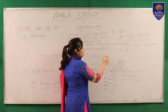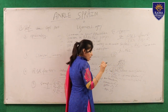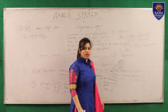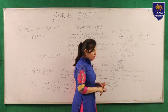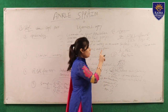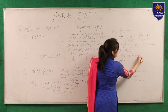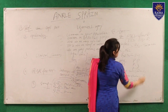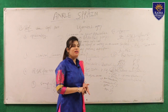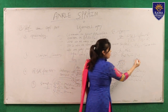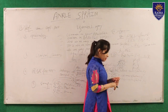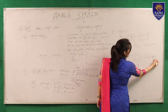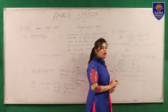The seventh point is rehabilitation of ankle sprain. Rehabilitation is divided into phases: phase one, phase two, phase three, and phase four. In phase one — days one to three — we apply the PRICE protocol: Protection, Rest, Ice, Compression, and Elevation.